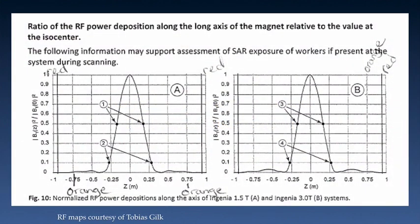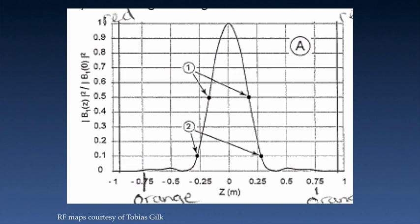Here is a sample map from both a 1.5T and 3T Philips Ingenia system, courtesy of Toby Gilk. Since they are the same, we're going to zoom in on the 1.5 Tesla map. The horizontal axis represents the z-axis or head-to-foot axis of the magnet, so zero is isocenter.